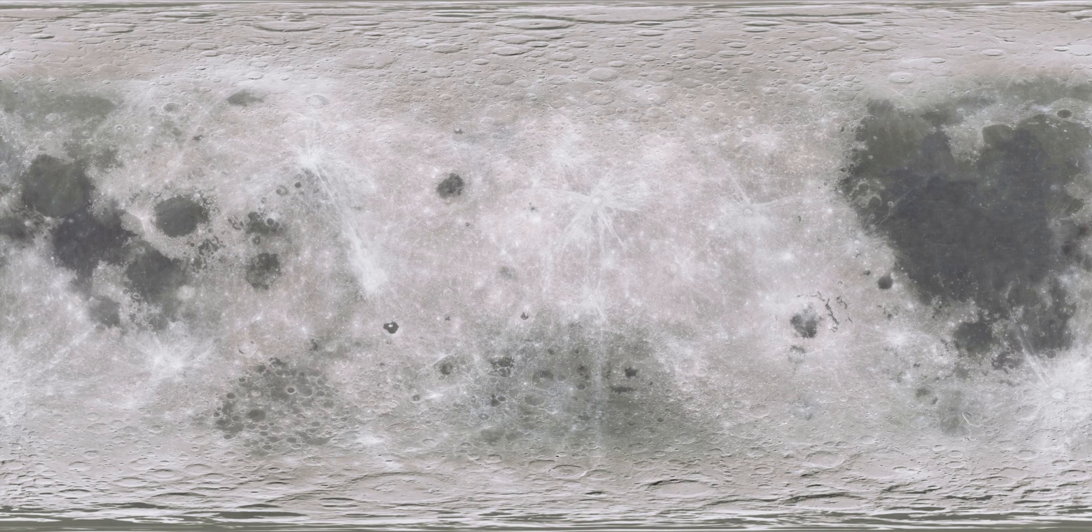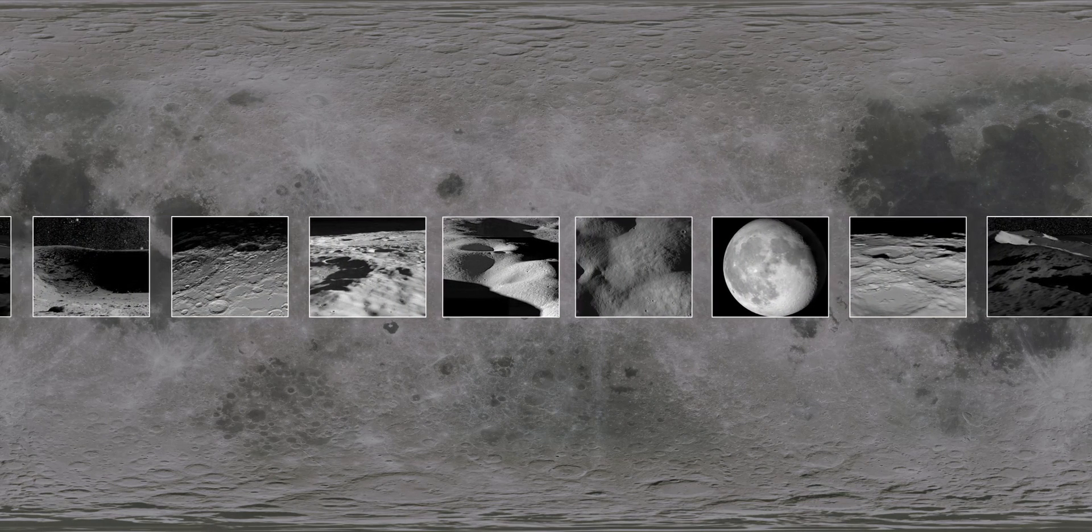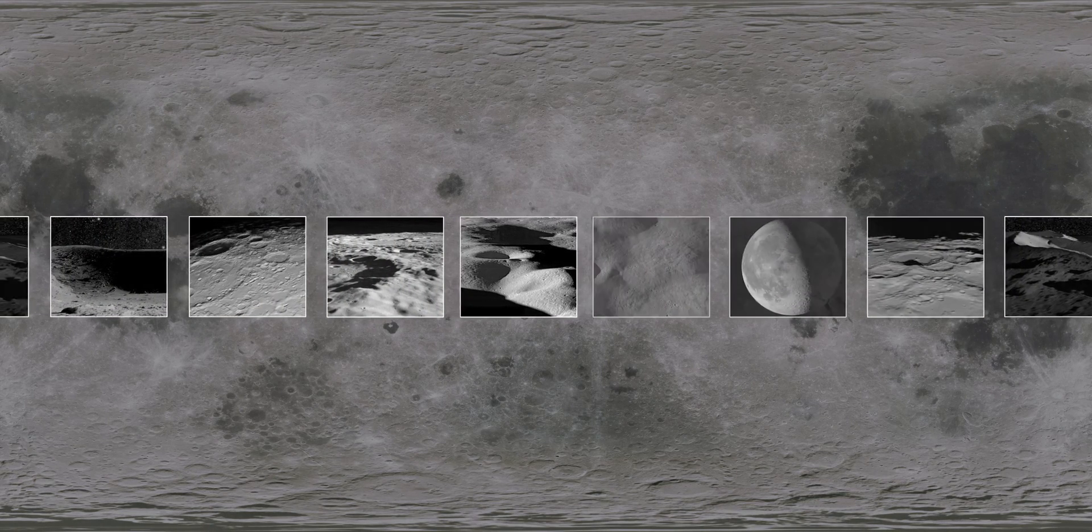From year to year, the Moon never seems to change. Craters and other formations appear to be permanent now, but the Moon didn't always look like this.